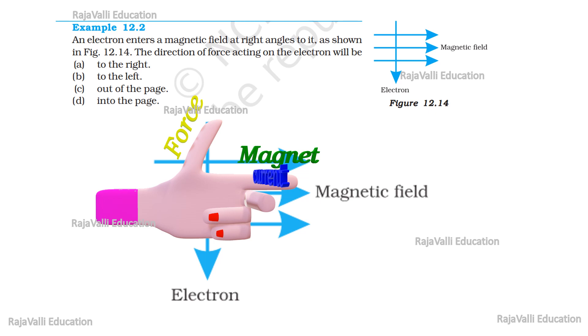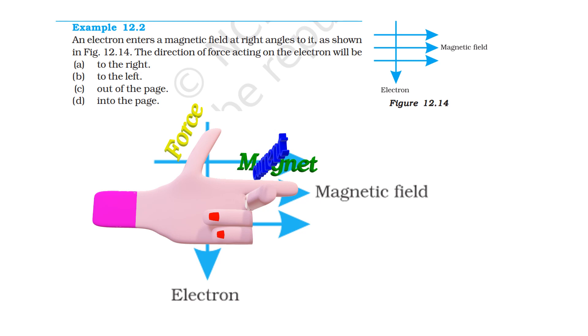This question can be easily solved by Fleming's left-hand rule. If we keep the direction of the forefinger of the left hand according to Fleming's left-hand rule towards the magnetic field direction,